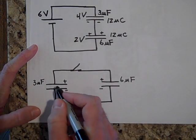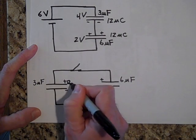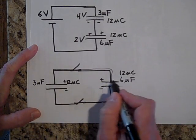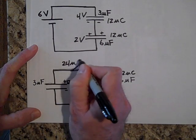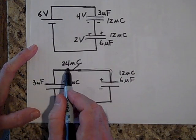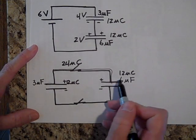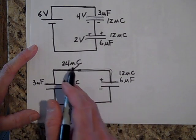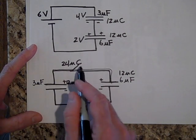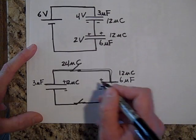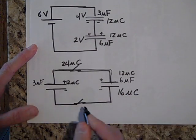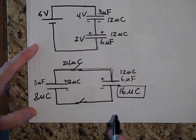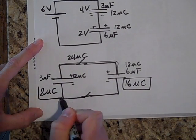All right, we're back. When you connect these, there was 12 micro coulombs on this top plate and 12 micro coulombs on this top plate. So that means that this whole piece of metal here had 24 micro coulombs. Now, do you think it's going to split that up evenly? I don't think so. I think that since the six micro farad is twice as good at storing charge as the three, I'm thinking that it's going to take twice the charge. And so split this up into three parts and give two of those parts to this guy and give one part to this guy. So there'll be 16 micro coulombs on each of these plates and 8 micro coulombs on each of those plates.